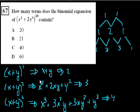So in this example, we have a binomial - binomial just means a two-term polynomial - and we're taking it to the 20th power. If we're taking it to the third power, we'd have four terms. If we're taking it to the fourth power, we'd have five terms. So if we're taking it to the 20th power, we're going to have 21 terms. And that's choice B.